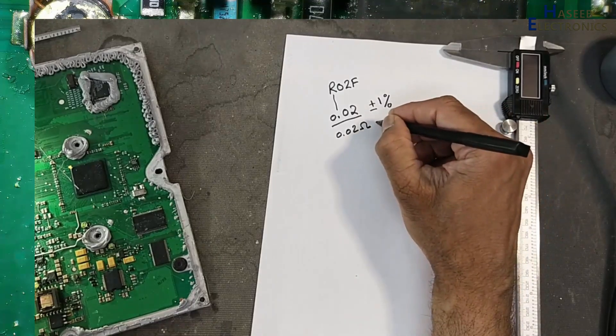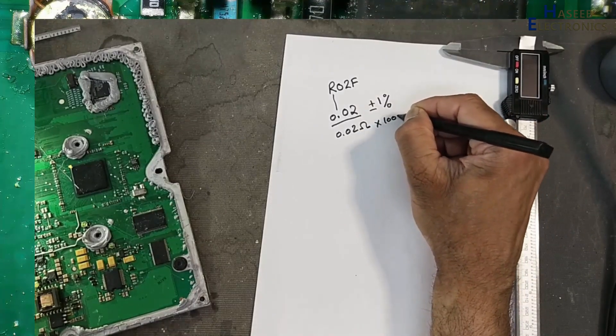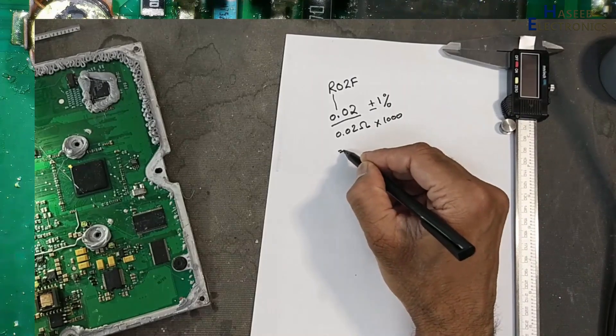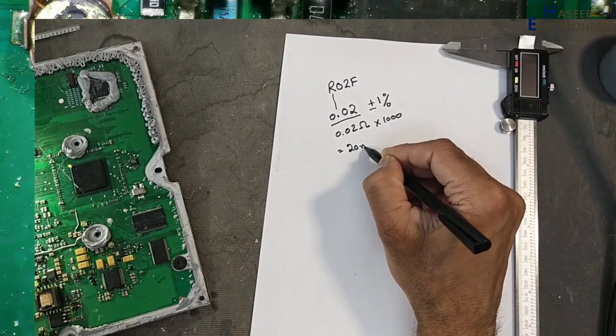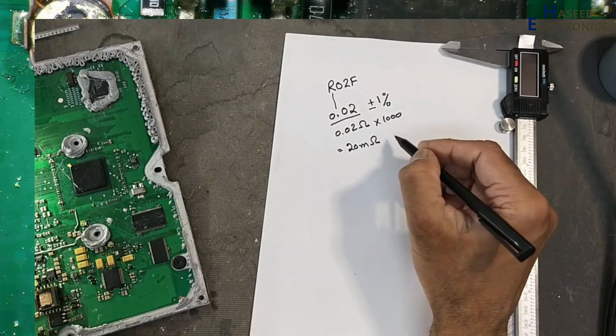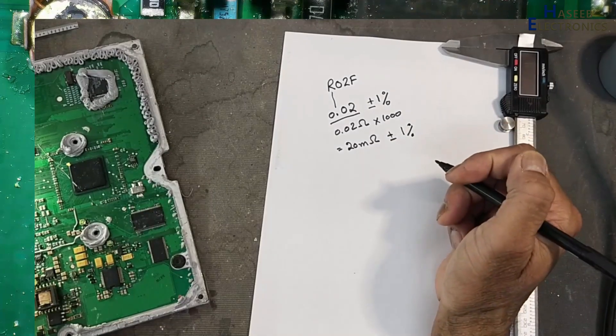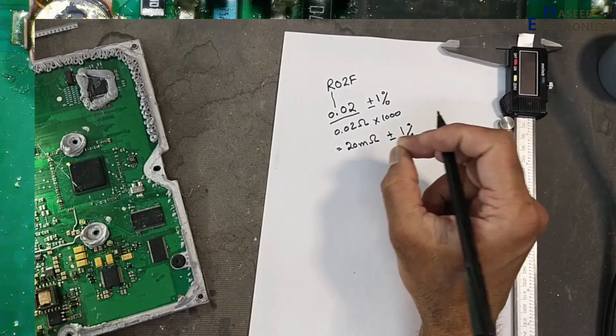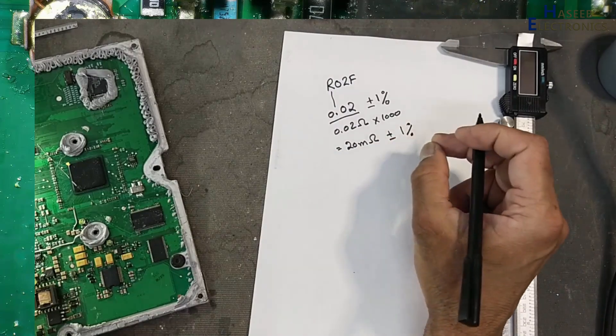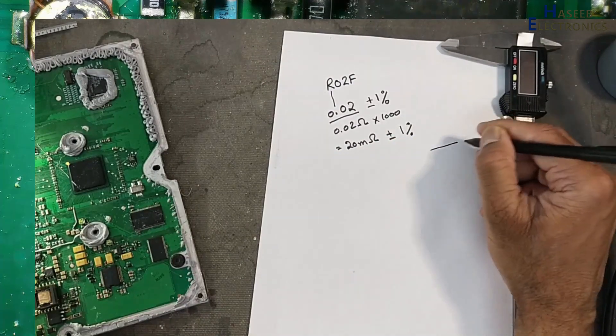If we multiply with 1000, it will be 20 milliohms plus minus 1%. When we say resistor, resistor is always in wattage. What is the watt rating?